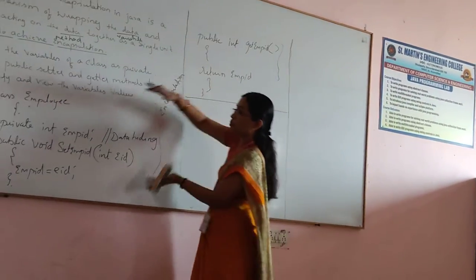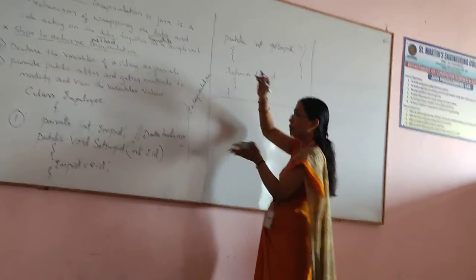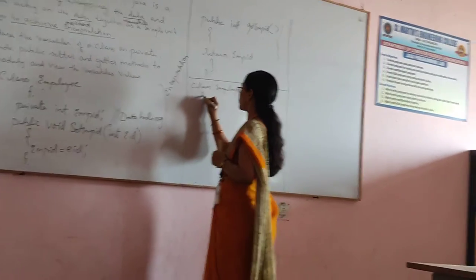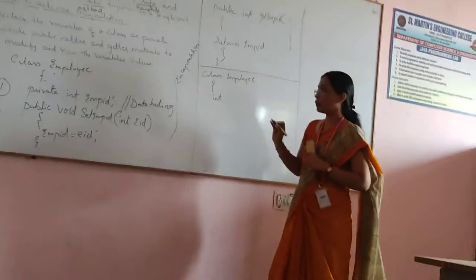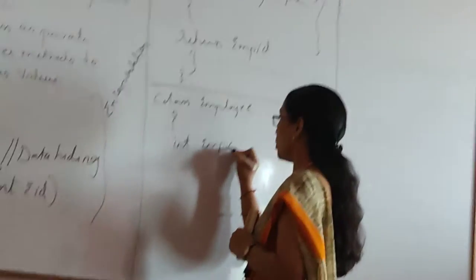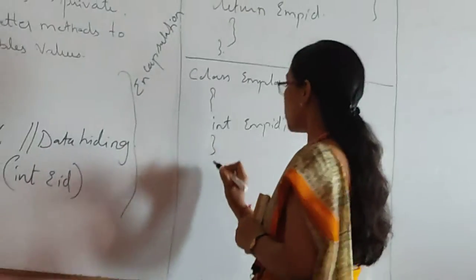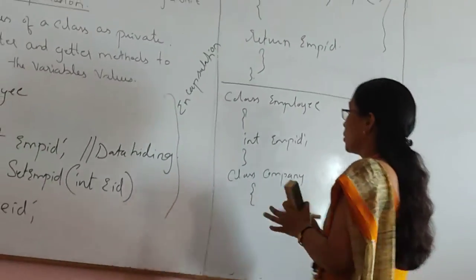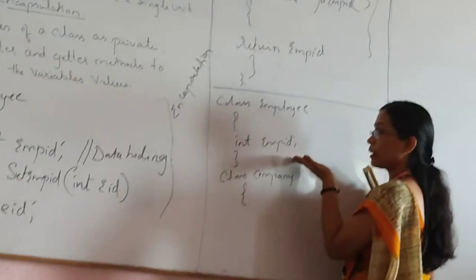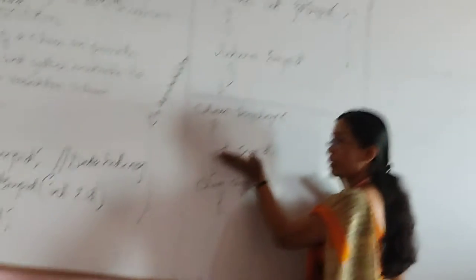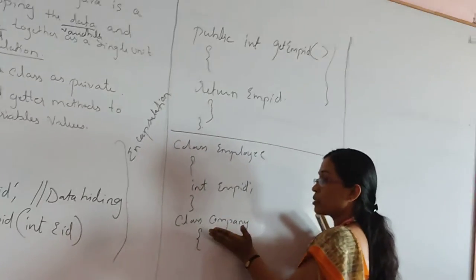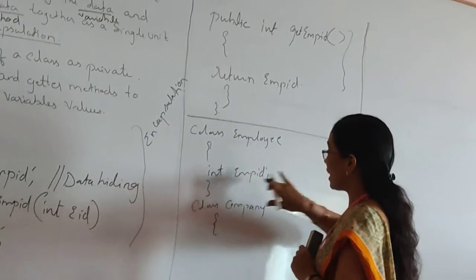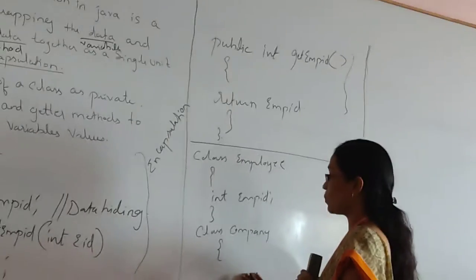In order to understand the concept, let us see the difference between this program and a normal program. In a normal program, I am not declaring the data variable as private — it is declared normally. In order to access it, I have declared a class with a data variable that is not made private. In order to access this value in another class, I am accessing it directly.